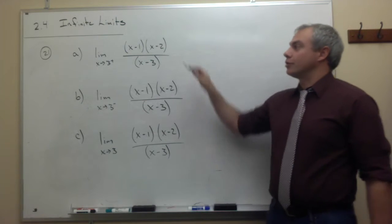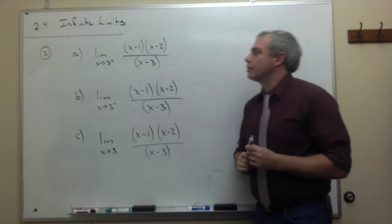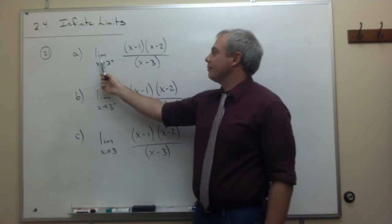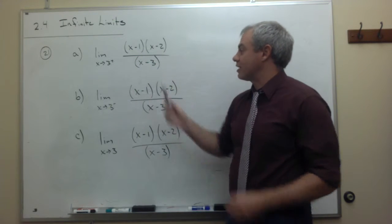In problem 21, we're going to look at three different limits. First of all, we want to evaluate the limit as x goes to 3 from the right of x minus 1 times x minus 2 over x minus 3.